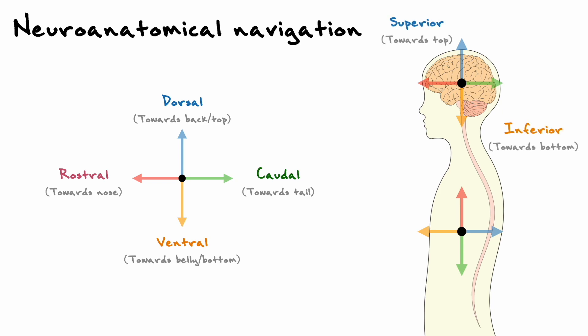So, for up in the brain, the word superior is generally used instead of dorsal, and the word inferior is generally used instead of ventral. Instead of the rostral caudal axis, the front and back axis is often described in terms of anterior and posterior, with anterior being towards the front and posterior being towards the back.